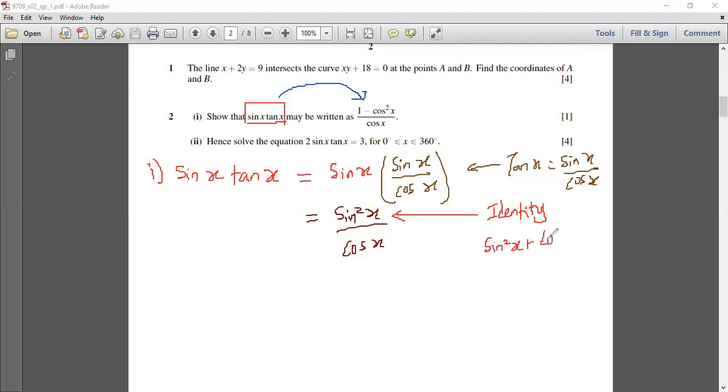So sine square x plus cos square x is always equals to one. So that means we can substitute that there. So we would get the numerator to change using that. So we can just rewrite this. So that mean sine square x would be equal to one minus cos square x. Oh, so this one, that's why it changes the numerator. One minus cos square x, and the whole thing is over cos x.